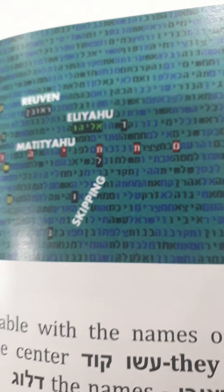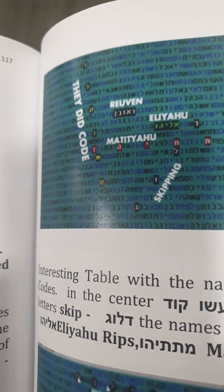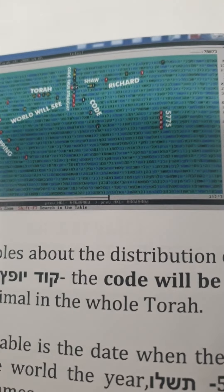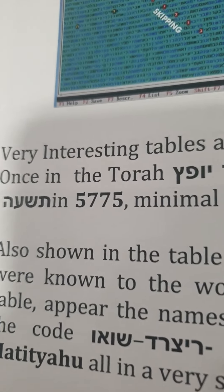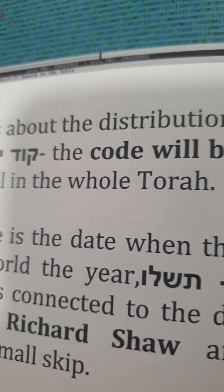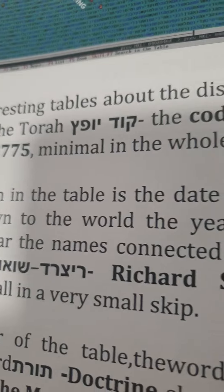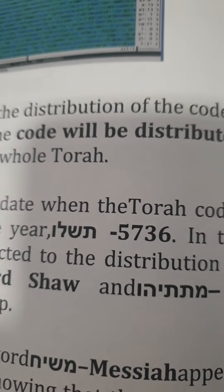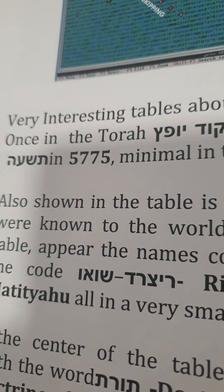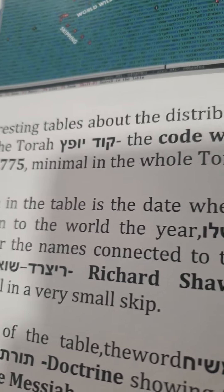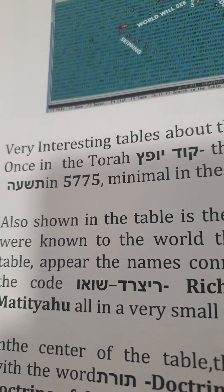It's very interesting to have all this come together — an important teaching about those who are doing the code. Let us see another table, also in this book, about Biblical Entities. Mrs. Sulman tells us about very interesting tables regarding the distribution of the code. Once in the Torah you have the words that the code will be distributed — which is 'code you fast,' meaning minimal. It comes with a date from the Torah: 5775, which is minimal. This is the year of the documentary of Richard Shaw, which we brought to the world — that it would be distributed.